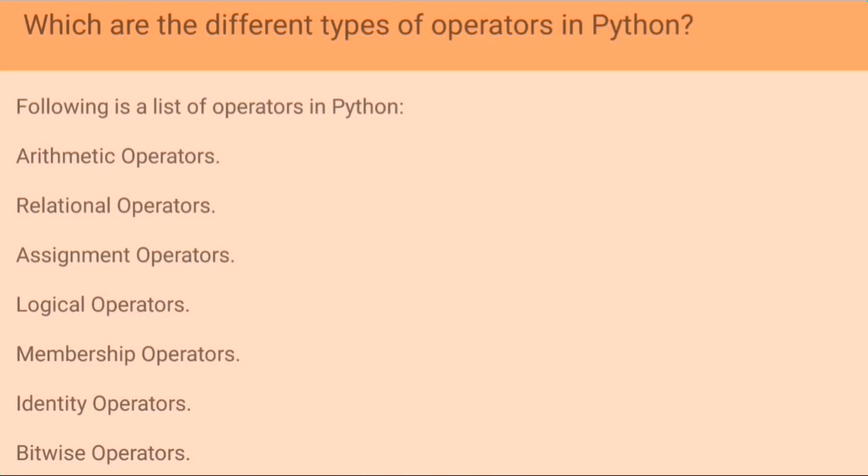Which are the different types of operators in Python? Following is a list of operators in Python: arithmetic operators, relational operators, assignment operators, logical operators, membership operators, identity operators, bitwise operators.